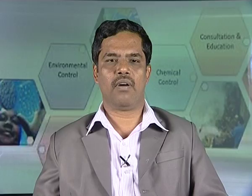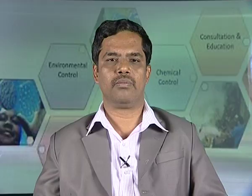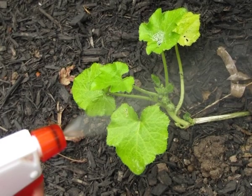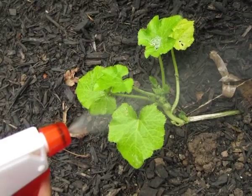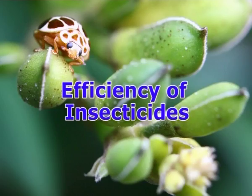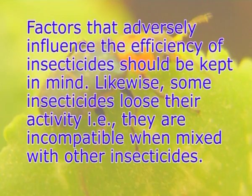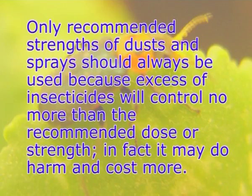Use of insecticides — for this, the following considerations may be kept in view. Choice of insecticides: it should be based on the type of mouth parts the pest possesses. A persistent organochlorine is good for insects with biting and chewing type of mouth parts, while a systemic organophosphorus insecticide is effective for insects having piercing and sucking type of mouth parts. Efficiency of insecticides: factors that adversely influence the efficacy of insecticides should be kept in mind. Likewise, some insecticides lose their activity — that is, they are incompatible — when mixed with other insecticides. Dose of insecticides: only recommended strengths of dust and sprays should always be used, because excess insecticides will control no more than the recommended dose or strength.